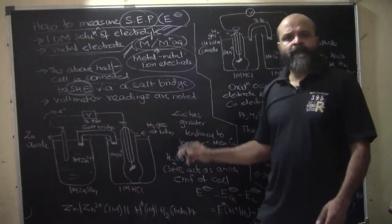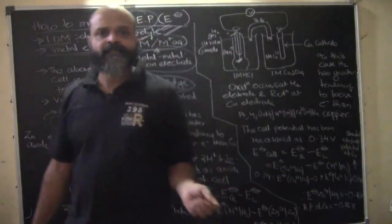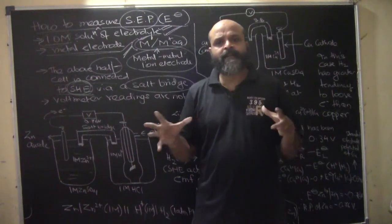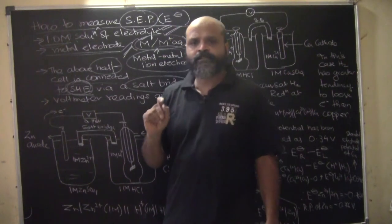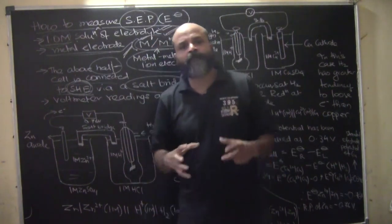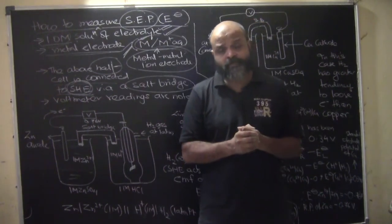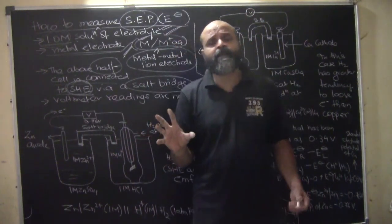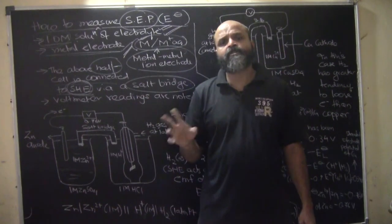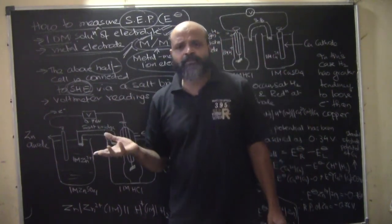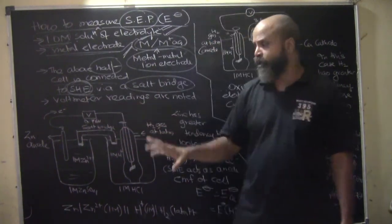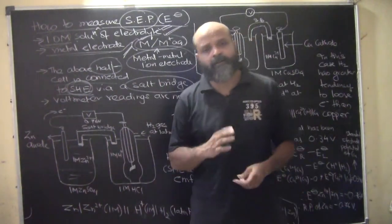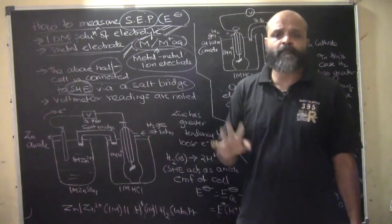The salt bridge consists of inert electrolytes that compensate for ions lost during the process, preventing the reaction from coming to a halt due to ion accumulation at the respective electrodes. The salt bridge compensates for ions without itself accumulating, ensuring the electrochemical process continues uninterrupted.